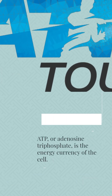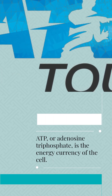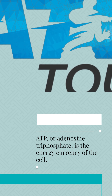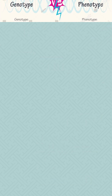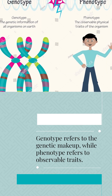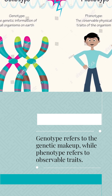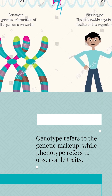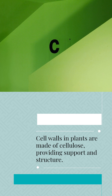ATP, or adenosine triphosphate, is the energy currency of the cell. Genotype refers to the genetic makeup, while phenotype refers to observable traits.